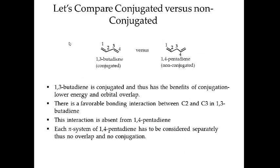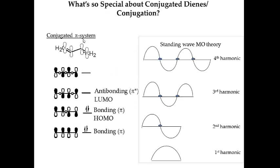Let's compare 1,3-butadiene, which is conjugated, and 1,4-pentadiene, which is non-conjugated. Again, it's the interaction between carbon two and carbon three that pulls the two pi bonds closer together and causes them all to overlap. Let's go back to this slide. You can see all four p orbitals overlap.